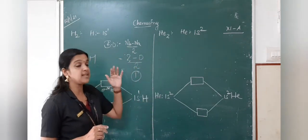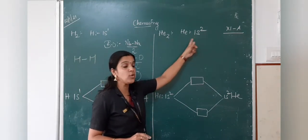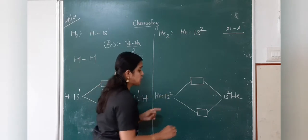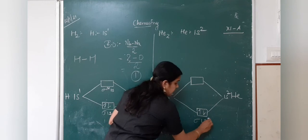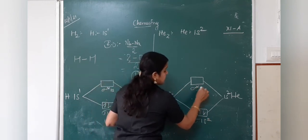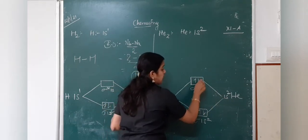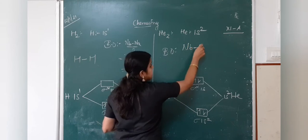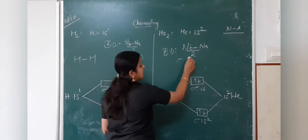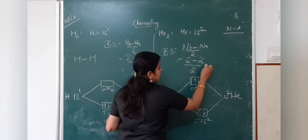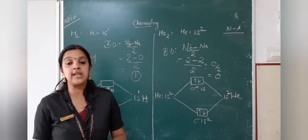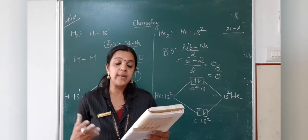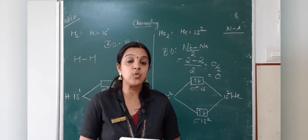For helium molecule He₂, atomic number is 2, so the configuration is 1s². The two electrons from one helium atom fill the bonding orbital (σ1s²), and the two electrons from the other helium atom occupy the anti-bonding orbital (σ*). Bond order = (2 − 2) / 2 = 0, which shows that the helium molecule does not exist. Likewise, molecular orbital diagrams can be drawn for lithium, carbon, and oxygen — videos will be provided for these examples.